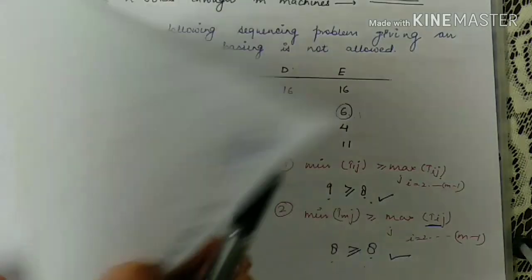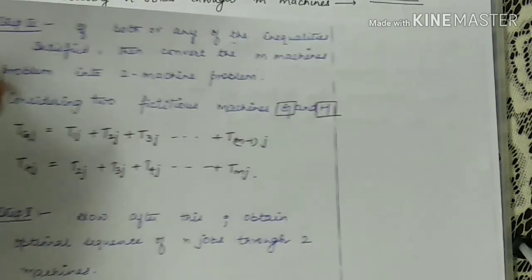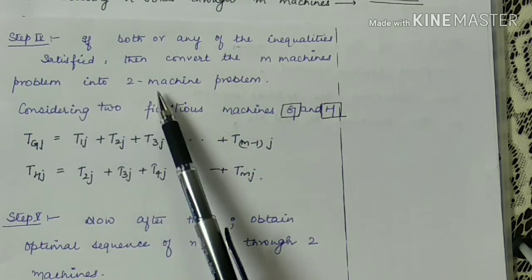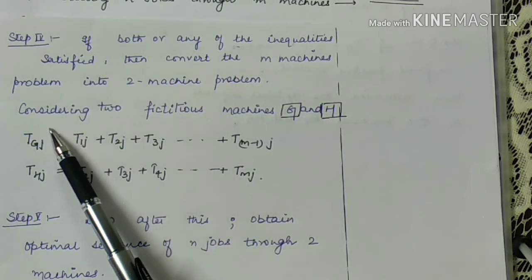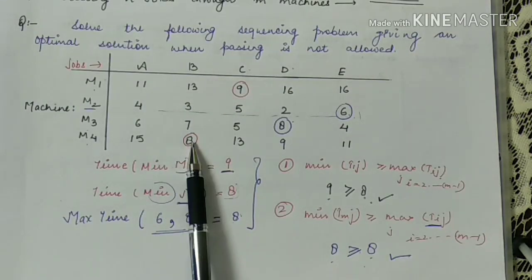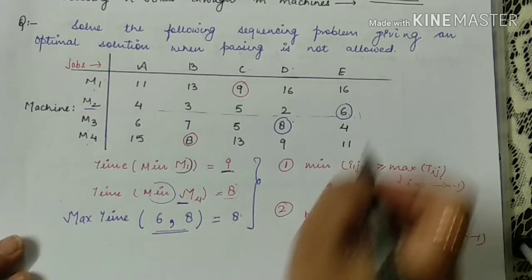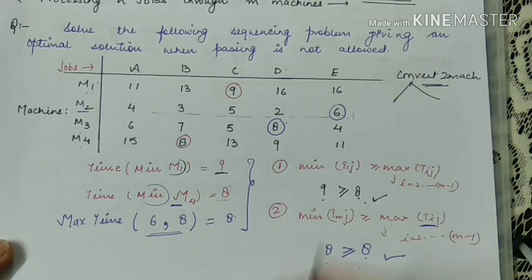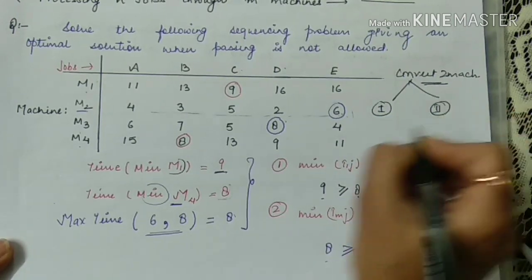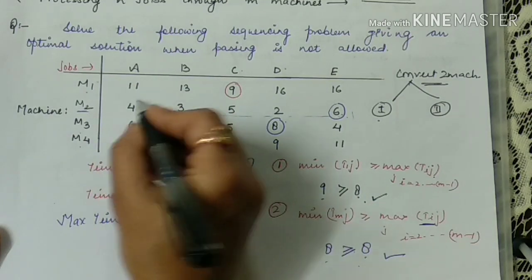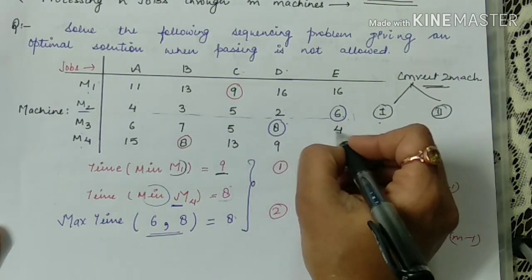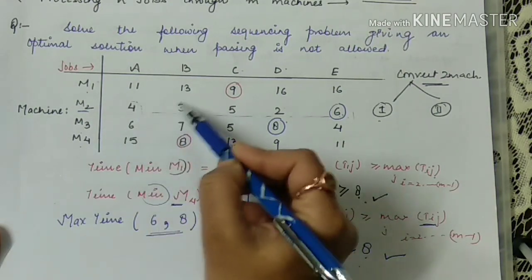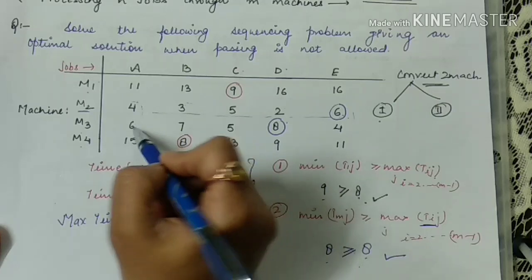Step 4: if both or any one of the inequalities is satisfied, we convert the M machine problem into a two machine problem. There are two criteria for this conversion. The first way: check if the sum of processing times on the intermediary machines is a constant value for every job. For example: 4+6=10, 3+7=10, 5+5=10, 8+2=10, 6+4=10 — all equal 10, a constant.